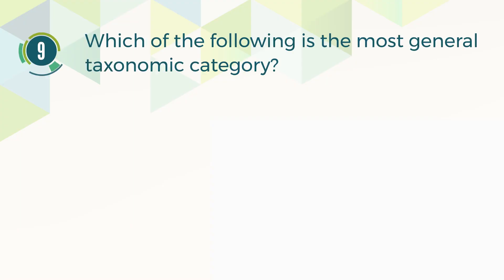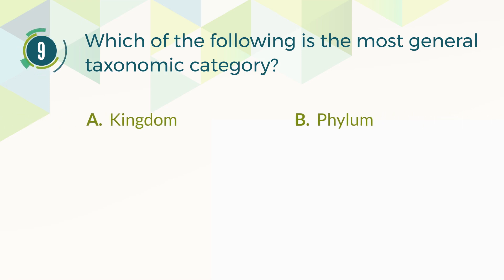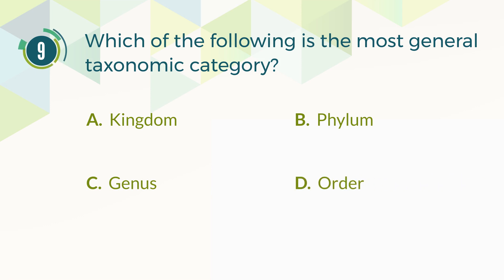Number 9. Which of the following is the most general taxonomic category? A. Kingdom. B. Phylum. C. Genus. D. Order.